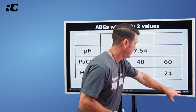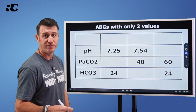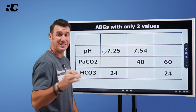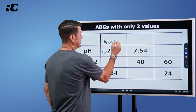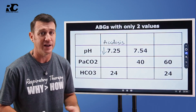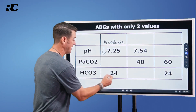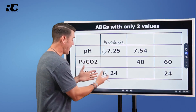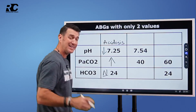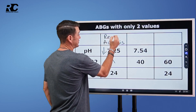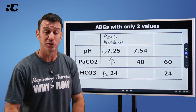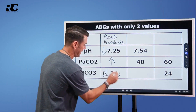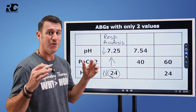Let's look at this first one. You've got a pH of 7.25. That's all I need to know. A pH of 7.25 is decreased — that is an acidosis. What's my CO2? They didn't give it to you. I don't need it because they tell me the bicarb is normal. If the bicarb is normal, who's causing the problem? The CO2. So without even having the CO2, I know that it is elevated, and this is a respiratory acidosis — not just a respiratory acidosis, this is an uncompensated respiratory acidosis. How do I know it's uncompensated? Because the bicarb is normal.